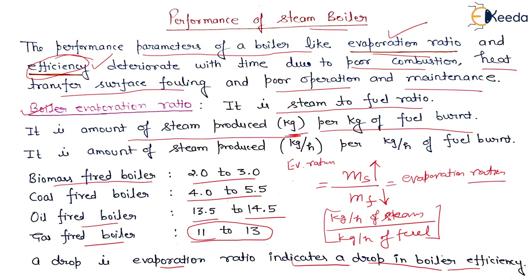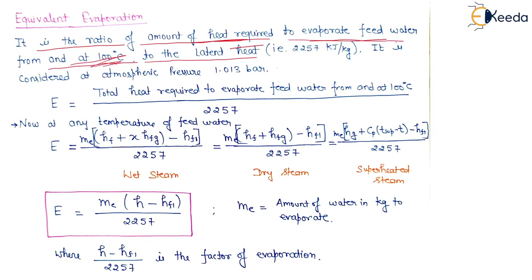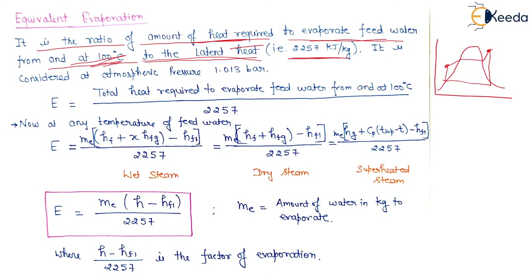Now let's see the next term: equivalent evaporation. It is the ratio of the amount of heat required to evaporate feed water from and at 100 degrees Celsius to the latent heat. The latent heat of water is 2257 kJ per kg.